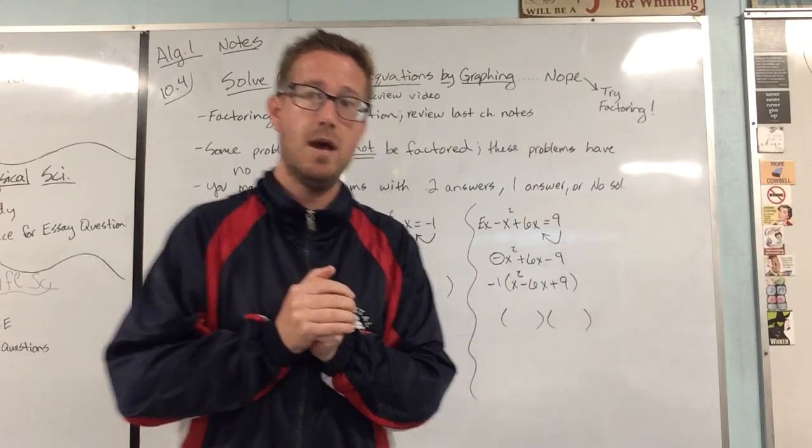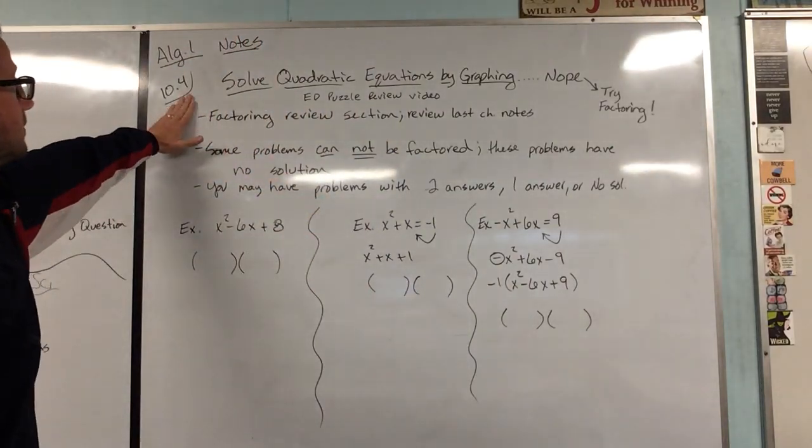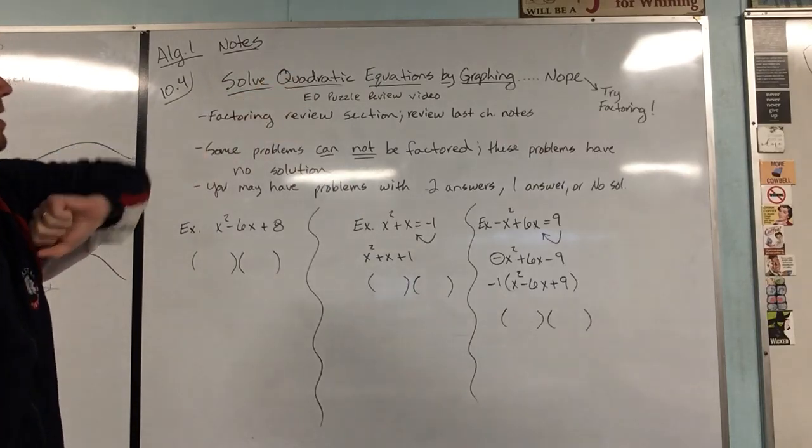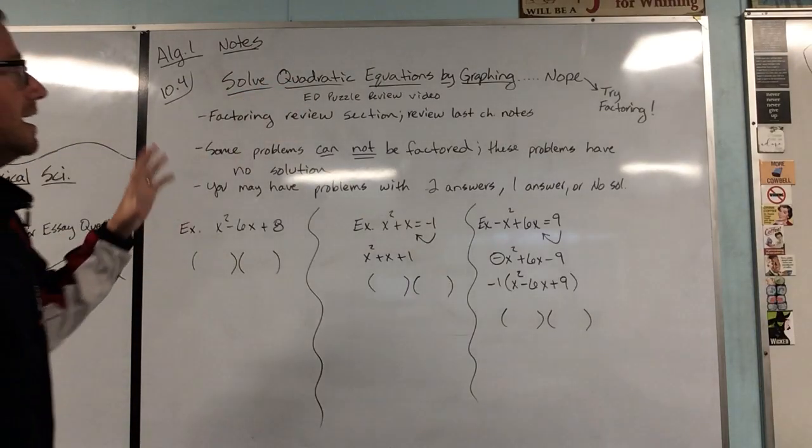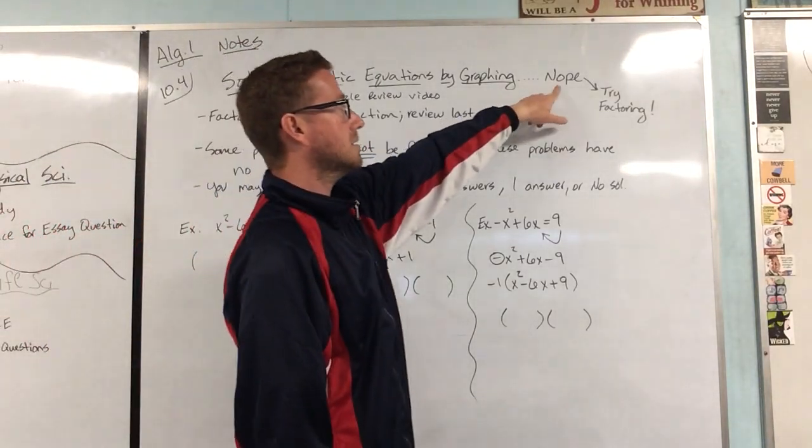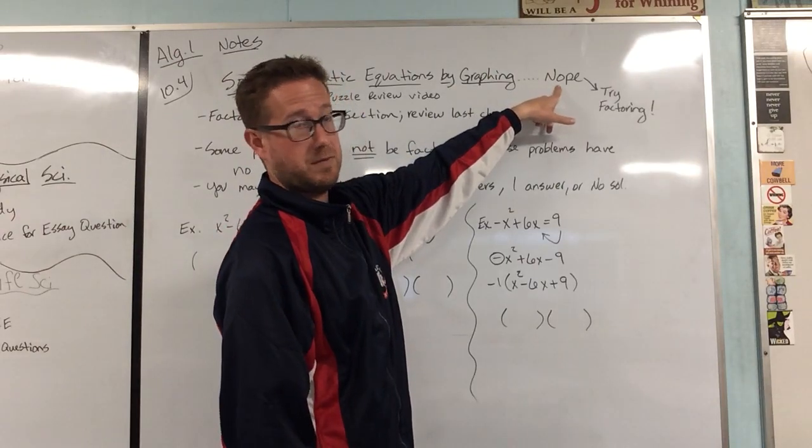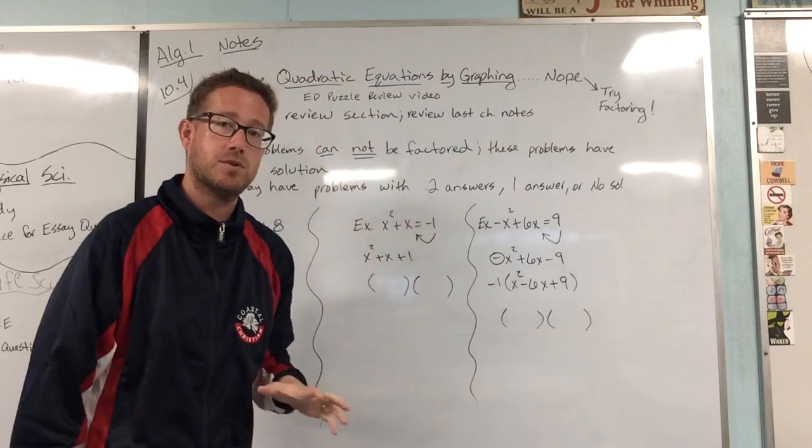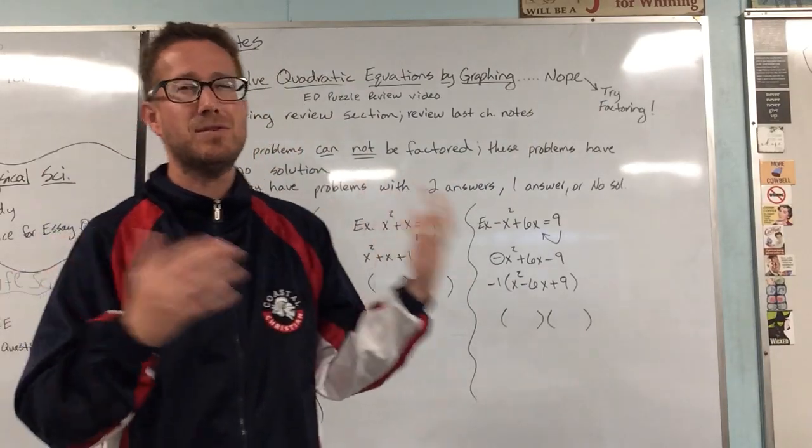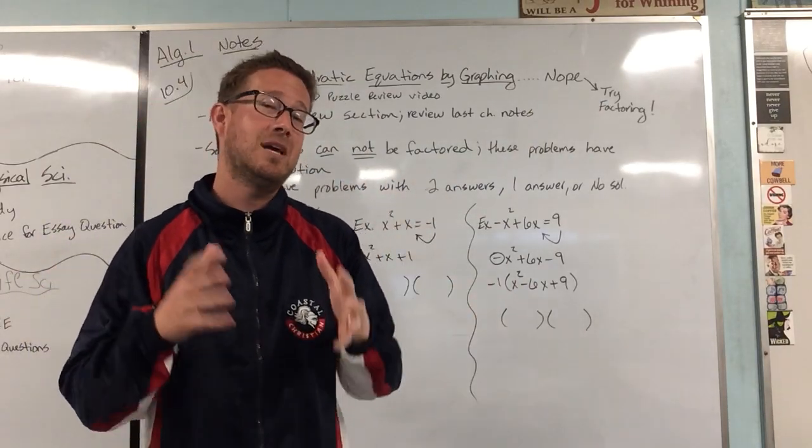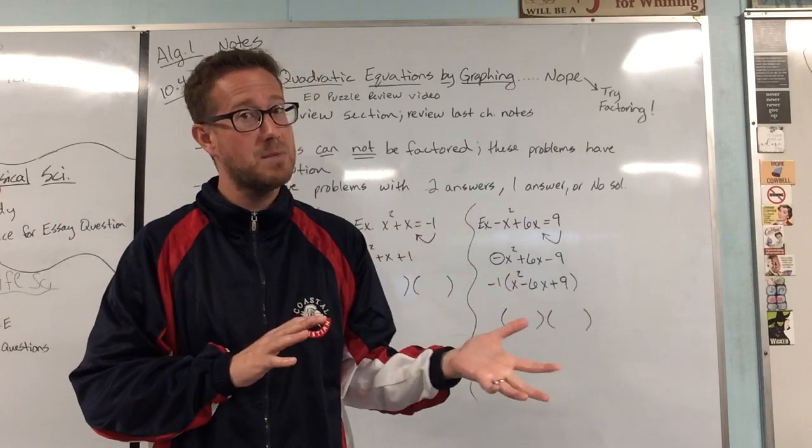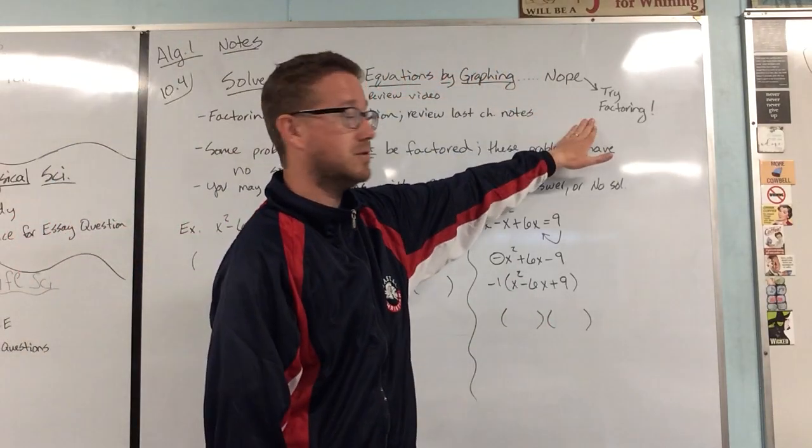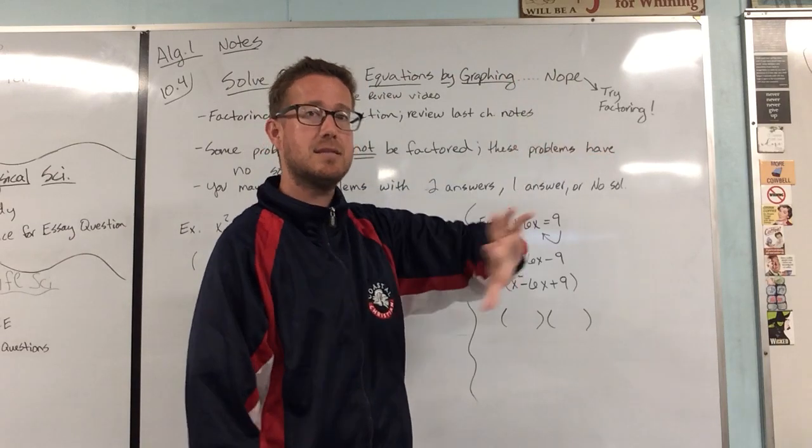All right, so what we're looking at today is section 4, and it is called solve quadratic equations by graphing. And then actually, nope, we are not going to solve them by graphing. We're going to try factoring instead. Trust me guys, I've looked through these types of problems, even looking through them with Algebra 2. Graphing is not a very precise method to solve, so really factoring is going to be the quickest, easiest way to show how many potential answers and what those answers would be.